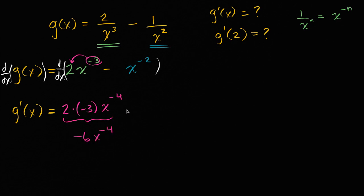And then minus, well, we're going to do the same thing again, right over here. We take this negative two, multiply it times the coefficient that's implicitly here. You could say there's a one there, so negative two times one. So you have the negative two there, and then you have the x to the, well, what's negative two minus one? Well, that's negative three to the negative three power.